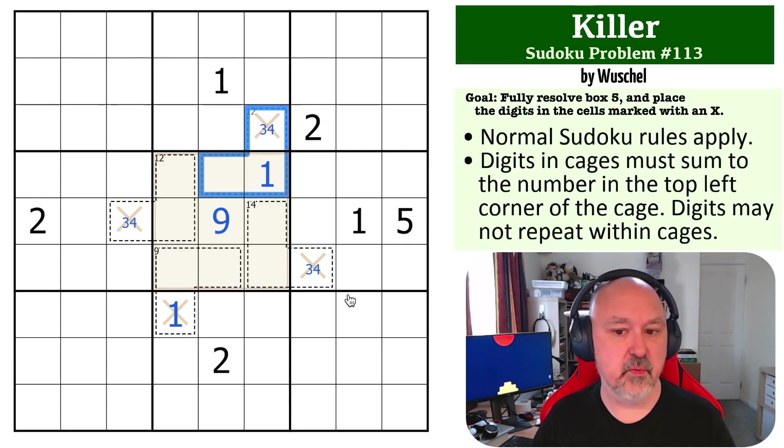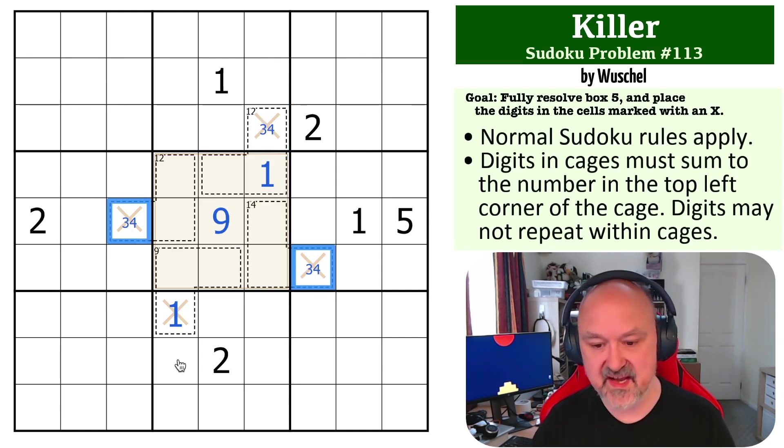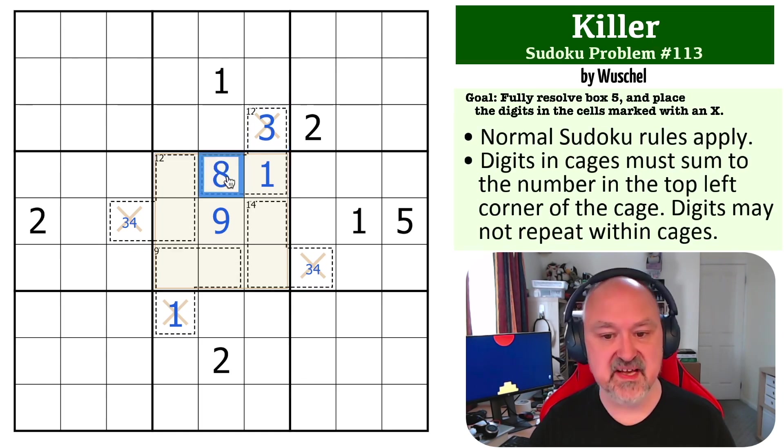But that would make this 3, 1, and 4. And 3, 1, and 4 sum to 8, not 12. So this would break this puzzle. So one of those has to be the 4. This cannot be the 4 because we've only got one 4 to play with. This has to be a 3. 3 and 1 sum to 4. To make the 12, this has to be an 8.